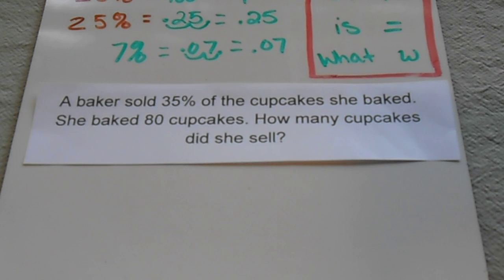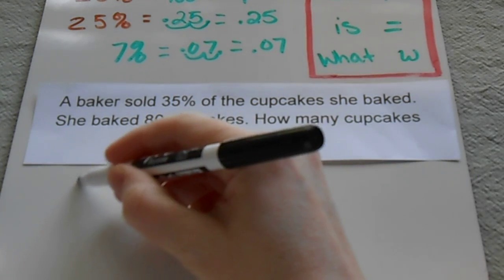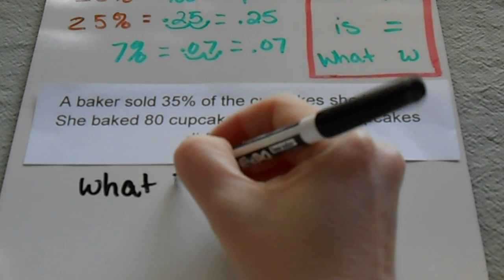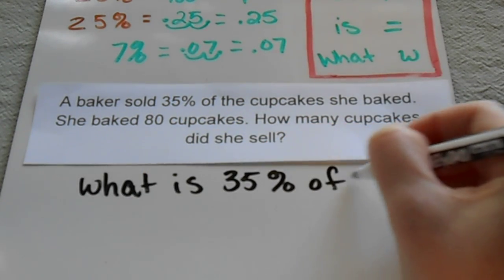Our first problem is: a baker sold 35% of the cupcakes she baked. She baked 80 cupcakes. How many cupcakes did she sell? So I'm going to simplify this and write, 'What is 35% of 80?'